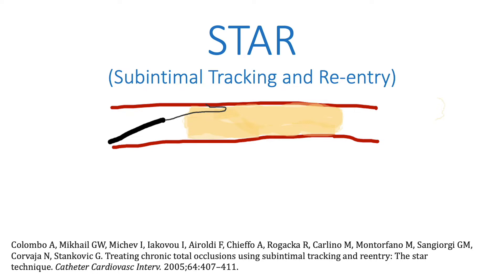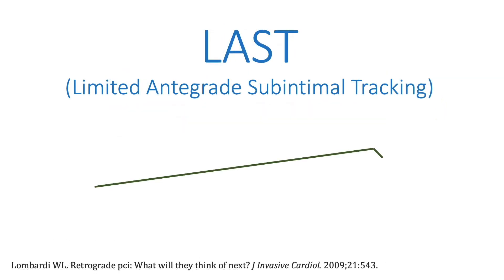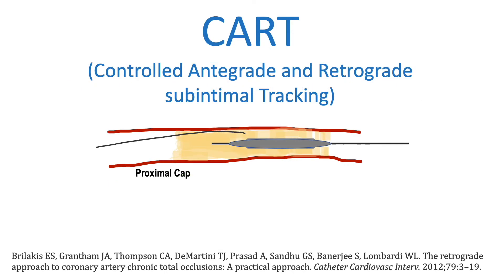Beyond the chronic total occlusion, LAST, or limited antegrade subintimal tracking, is similar to STAR except after utilizing a loop wire to cross the chronic total occlusion subintimally, a high tip load wire with an acute distal bend is then used for re-entry into the true lumen.